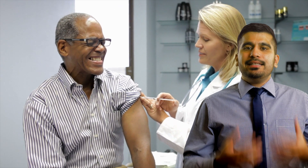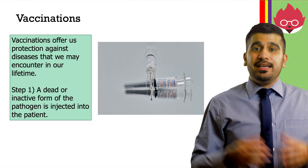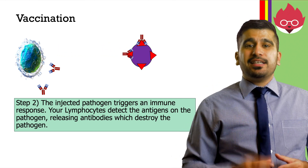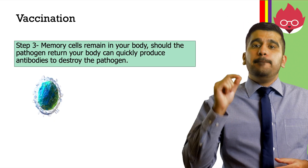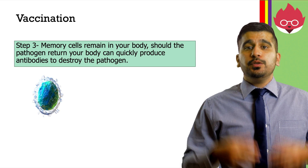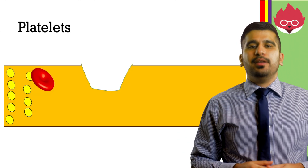It is the discovery of memory cells that led to vaccinations being developed. Vaccinations offer protection against diseases we may encounter over our lifetime. In step one, a dead or inactive form of the pathogen is injected into the patient. In step two, the injected pathogen triggers an immune response — lymphocytes detect the antigens releasing antibodies which destroy it. In step three, memory cells remain in your body, so should you encounter that pathogen again, you can quickly produce antibodies to destroy it.